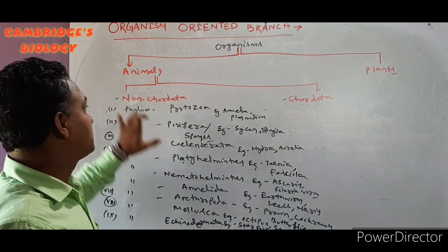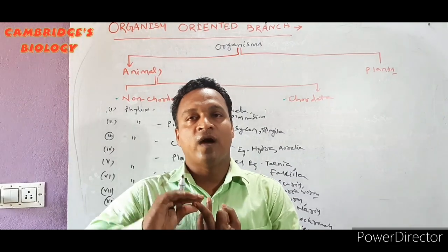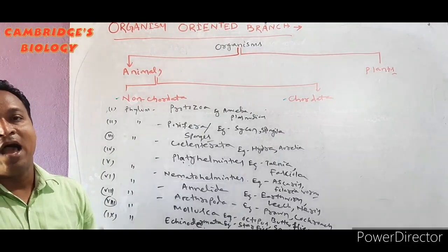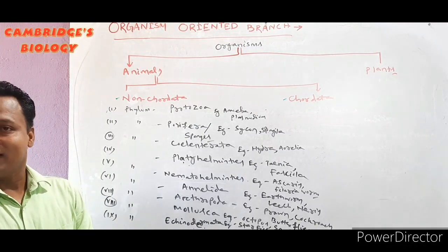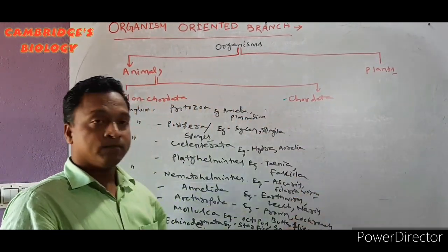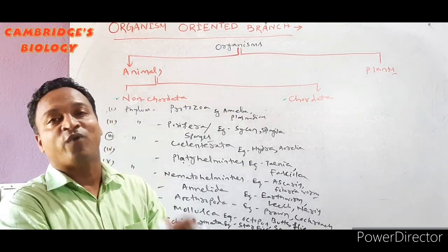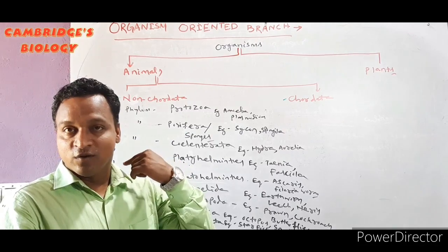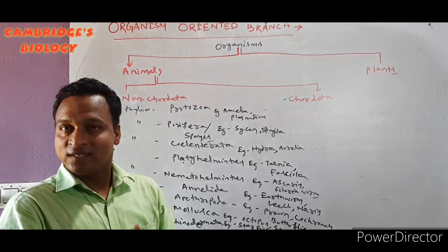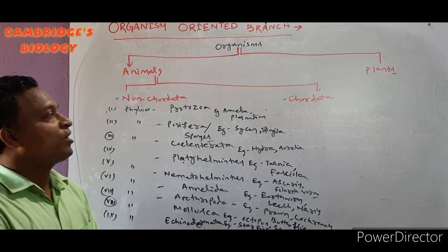So these are the phyla found in Non-Chordata: Protozoa, Porifera, Coelenterata, Platyhelminthes, Nematohelminthes, Annelida, Arthropoda, Mollusca, and Echinodermata. In all of these, notochord is not found, pharyngeal gill slits are not found, nervous system is on the ventral side, and the nervous system is solid. This is the basic fundamental about the phyla of Non-Chordata.